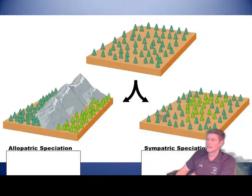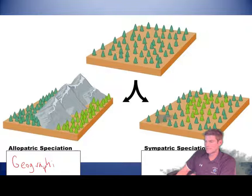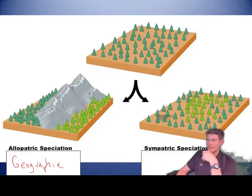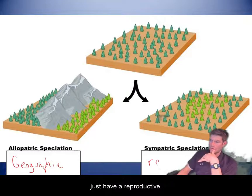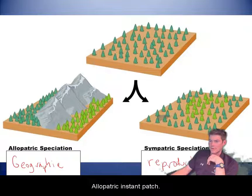Allopatric speciation is geographic speciation — a mountain range grew up between populations and blocked them off. Sympatric means they're not blocked off geographically; they just reproductively isolate themselves. So allopatric and sympatric — kind of fun words.